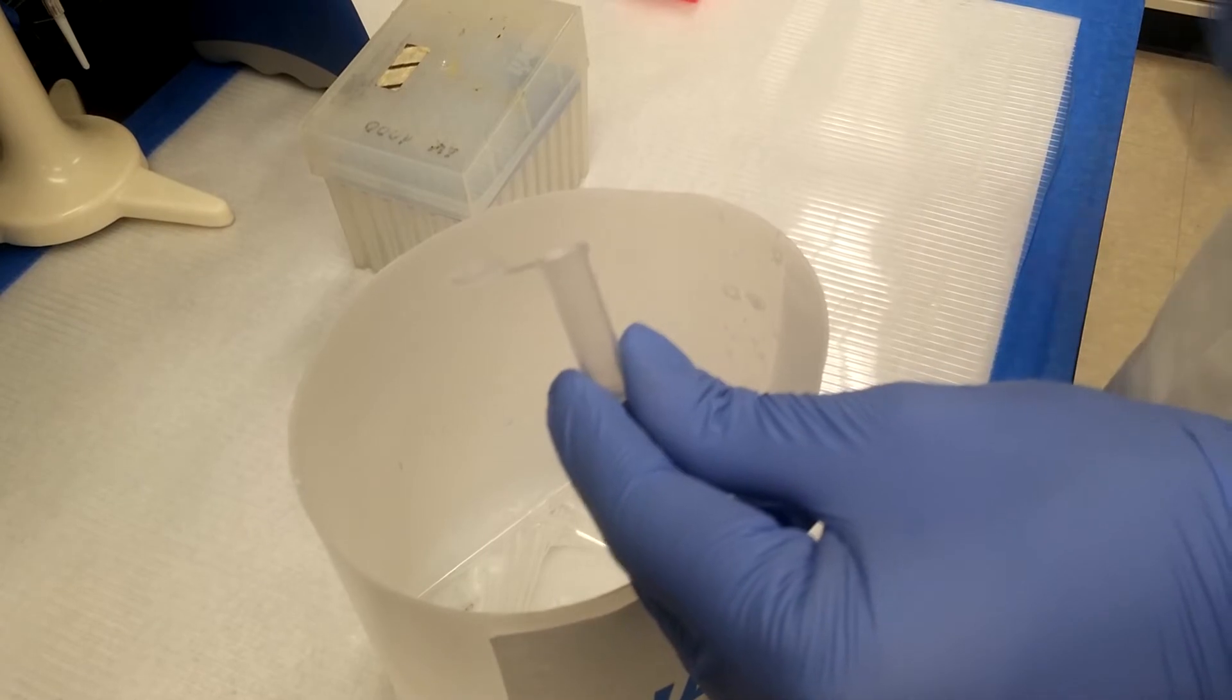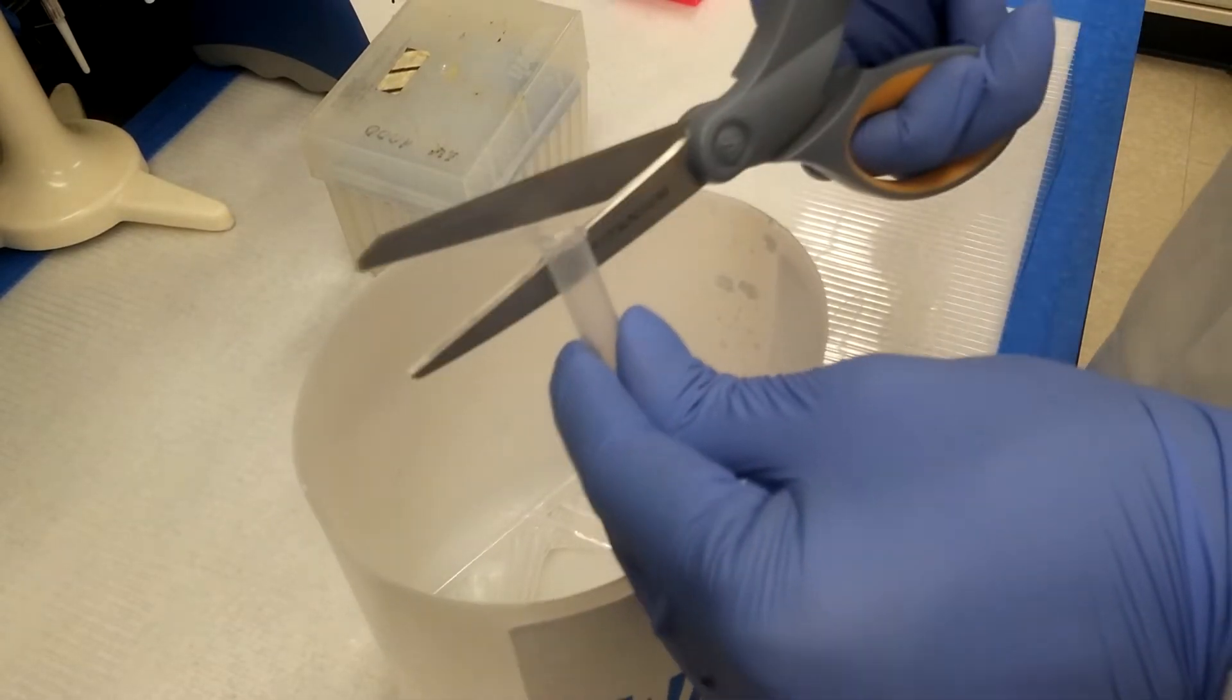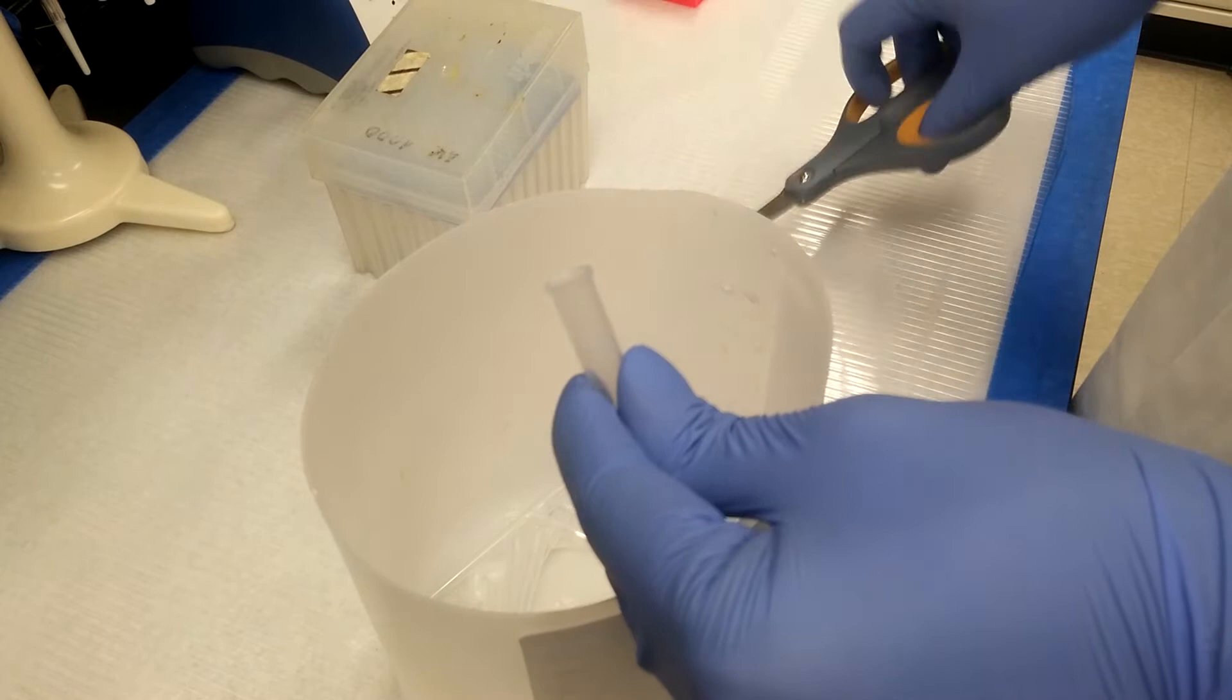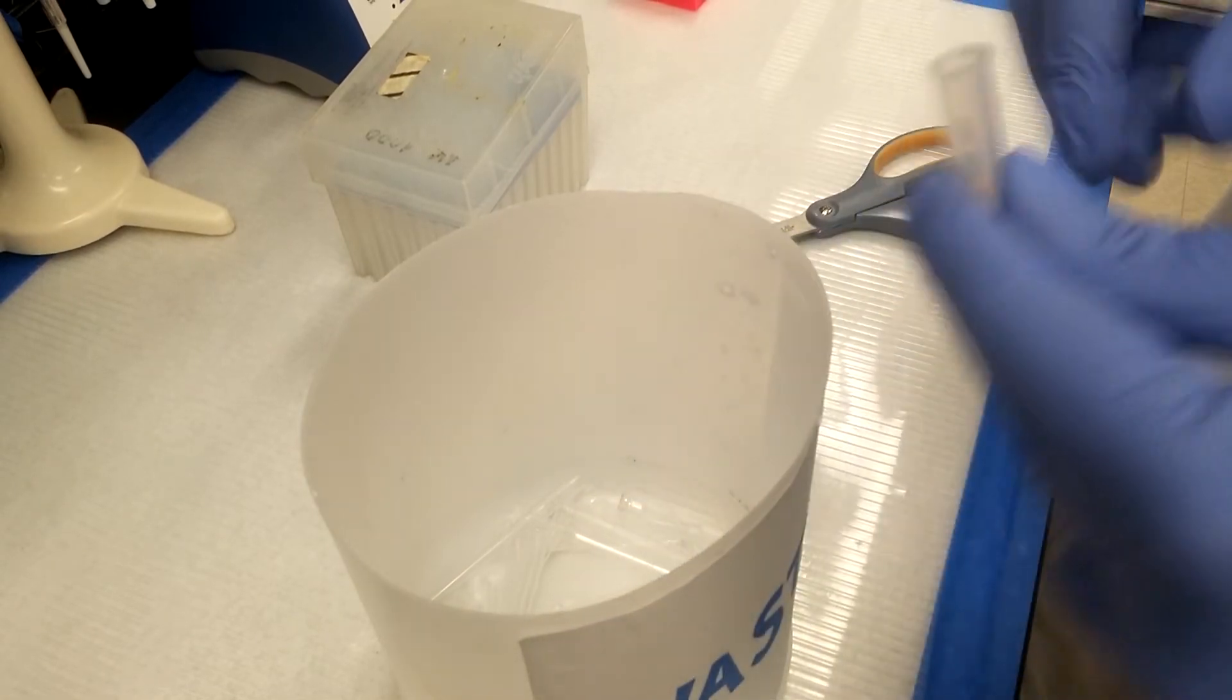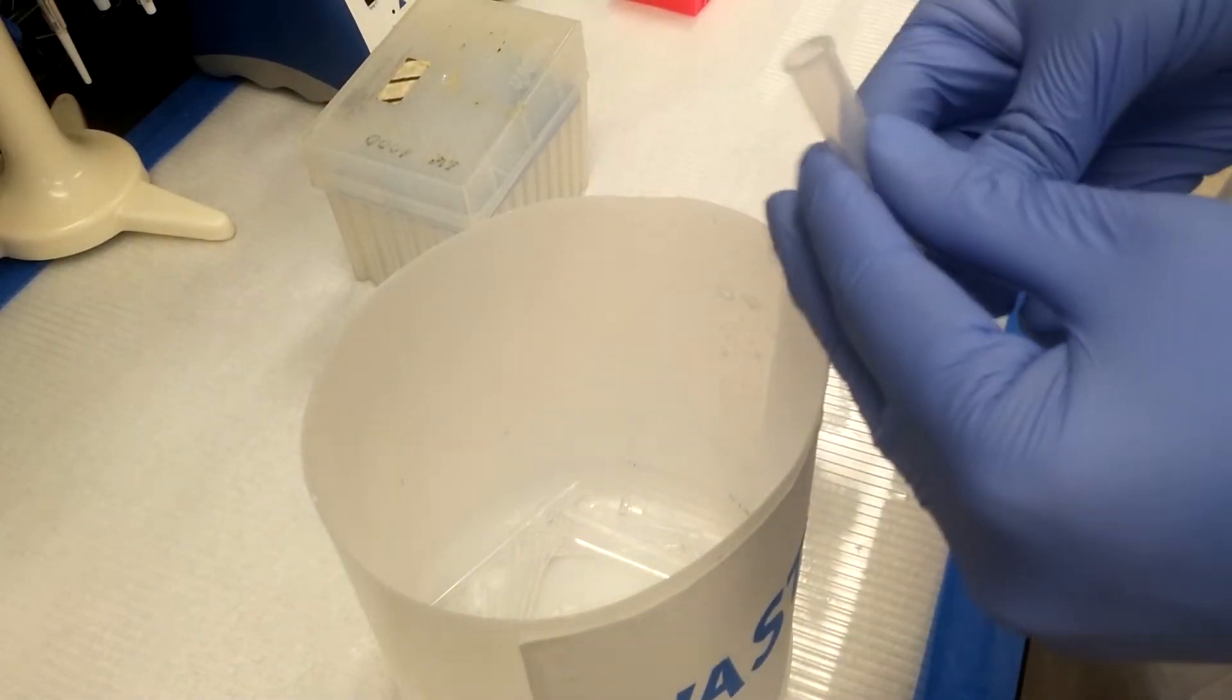8 more 2 milliliter tubes are prepared by cutting off the lid from each of them. The lids can then be discarded. These tubes will be used as collection columns.